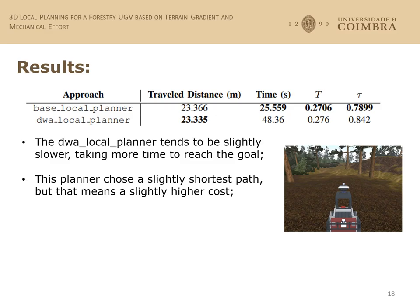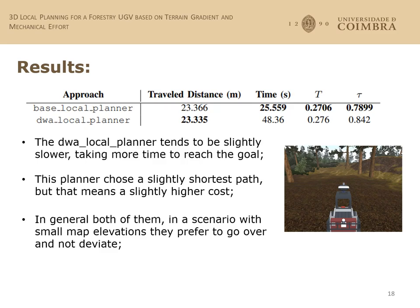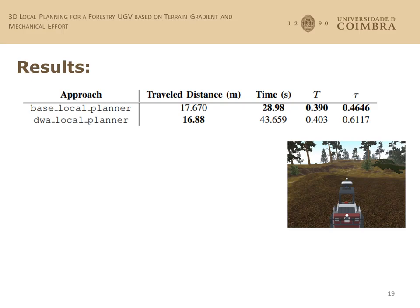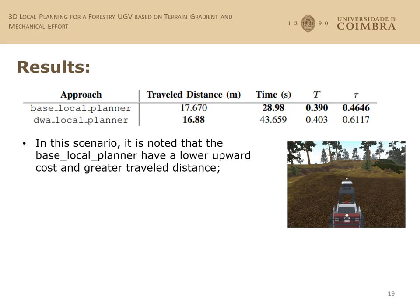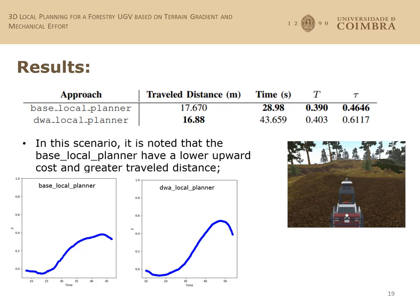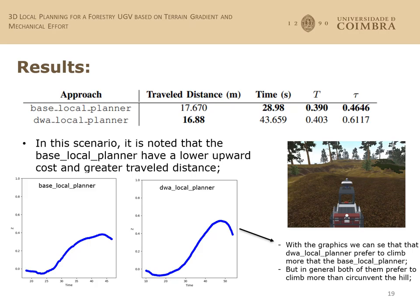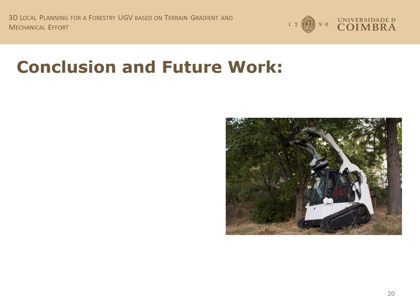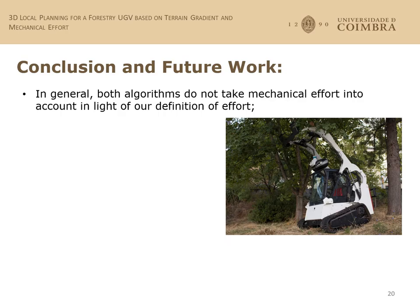With these results and the results from the last scenario, we can conclude that DWA is slower than the base local planner, taking more time to reach the goal. DWA chooses a slightly shorter path with a slightly higher cost, but in general the difference is not significant. Both tend to choose to go over the elevation rather than deviate around it. In the third scenario, the difference in upward cost was bigger — DWA tended to go more uphill than the base local planner, as seen in the graphics. Both prefer to go up and down the hill instead of circumventing it, so despite the base local planner having a better upward cost, neither takes mechanical effort into account as they could.